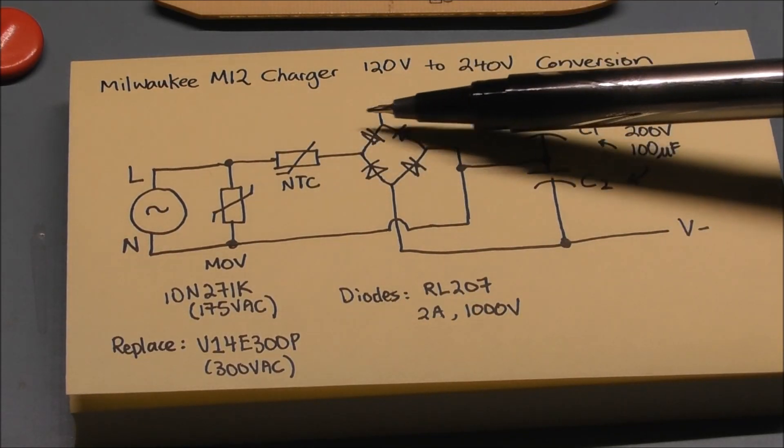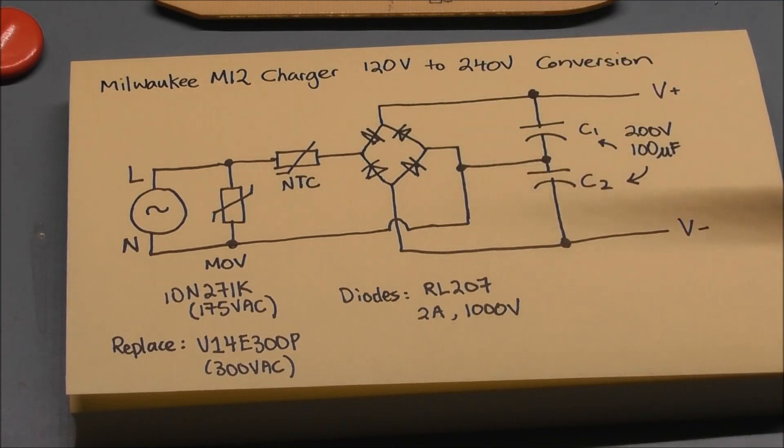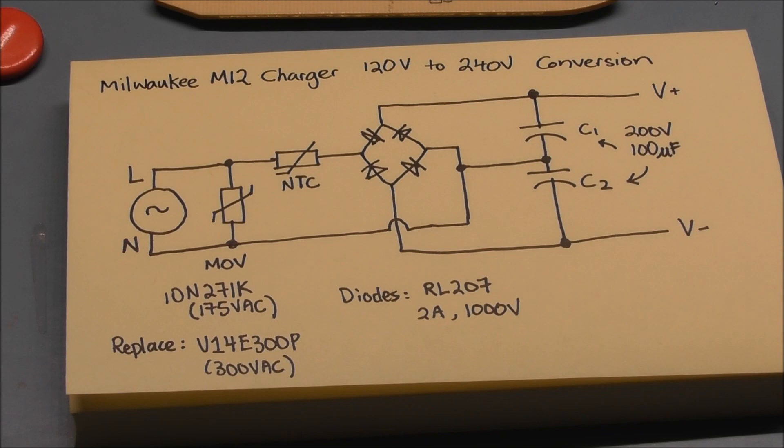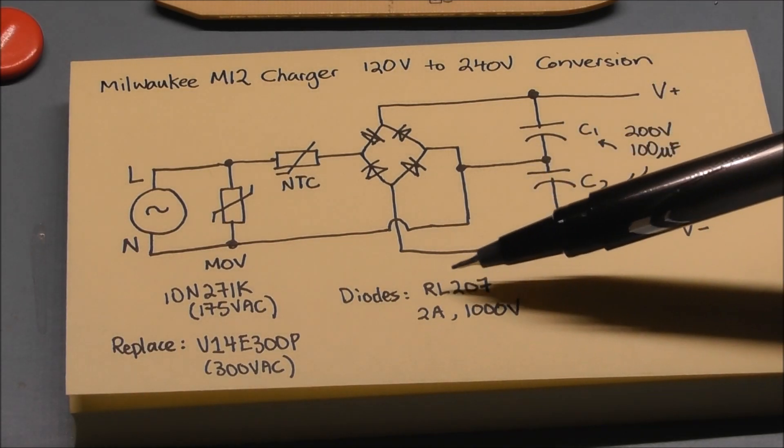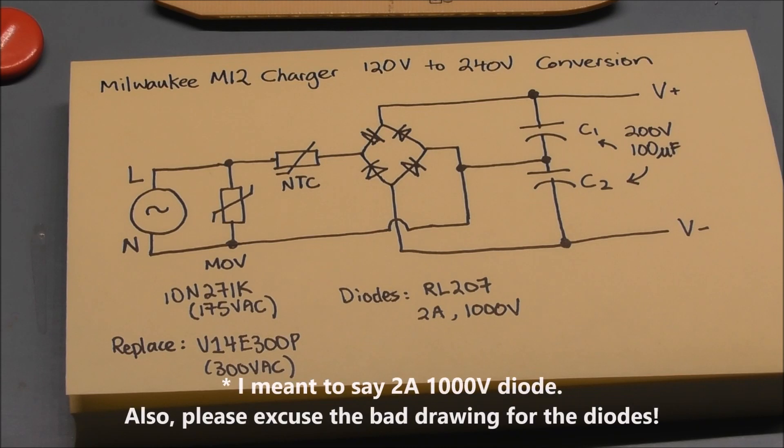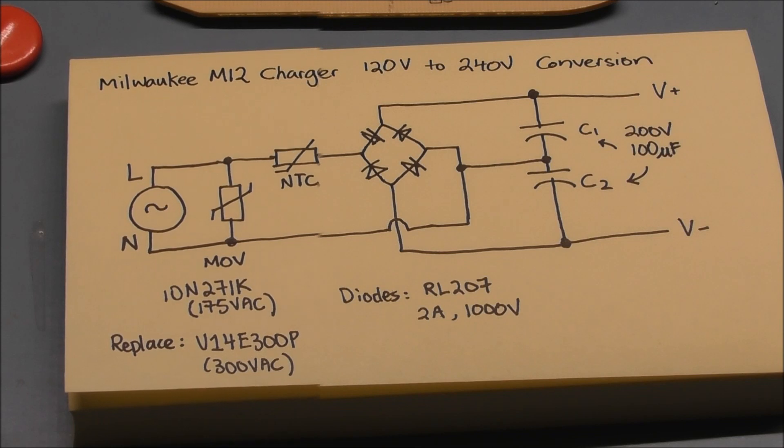Now we look at the bridge rectifier which is on the board, and these are made up of four discrete diodes. I've looked at the part number and the part number is RL207, and this turns out to be a 2 amp 1000 volt diode, so we don't need to change that and it's well within the voltage ratings.